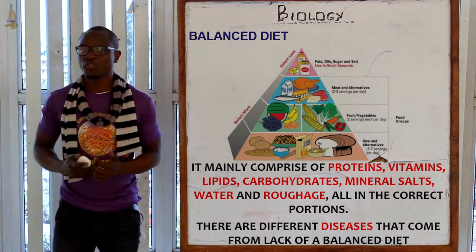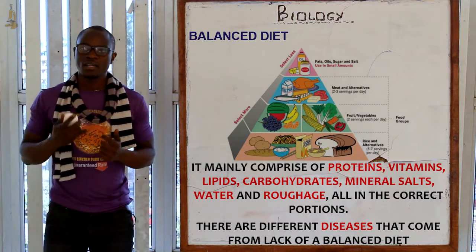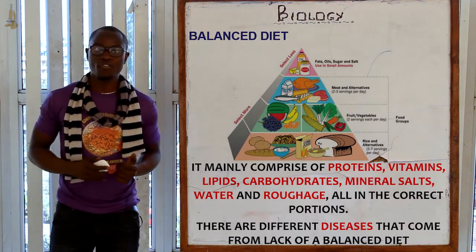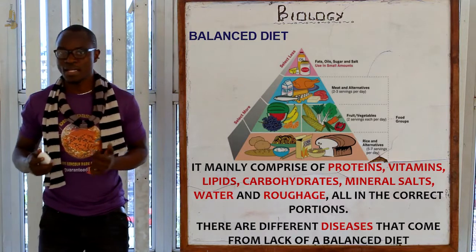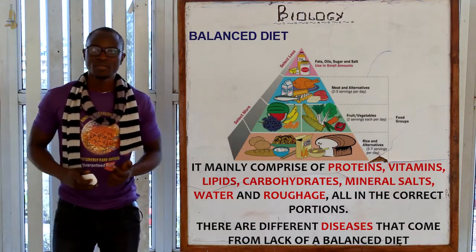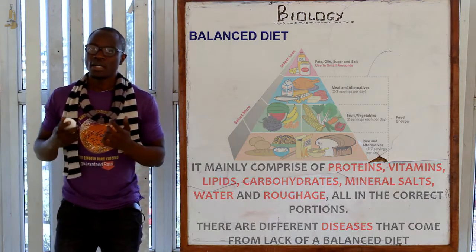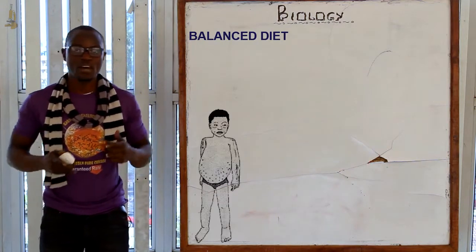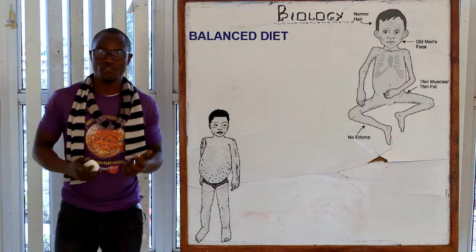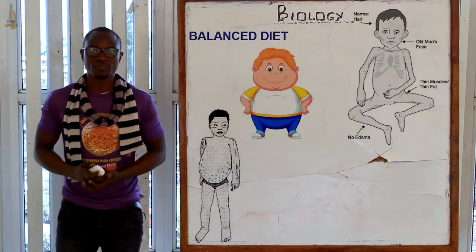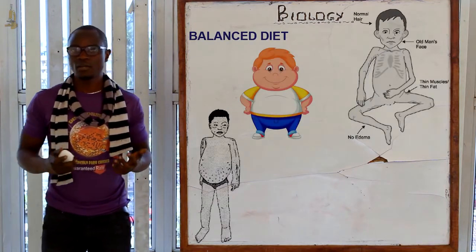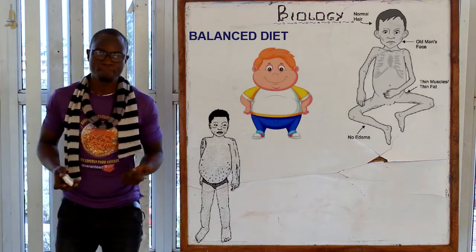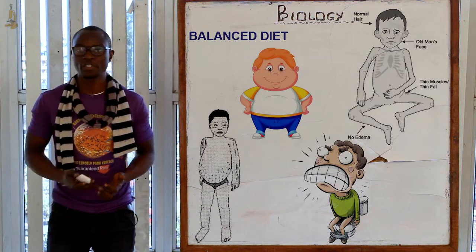A balanced diet also includes roughages. There are diseases that may come from lack of a balanced diet. Among these diseases we have kwashiorkor, marasmus, obesity, and constipation.